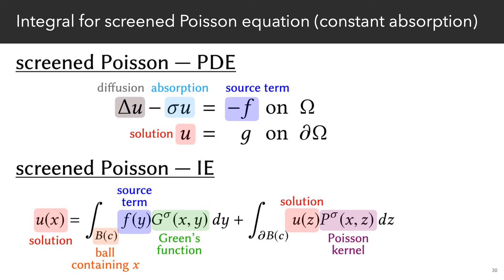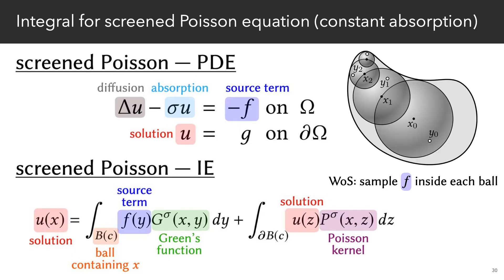As with PDEs, we can keep adding terms to integral equations to capture additional behavior. So for instance, there's a nice integral representation for the screen Poisson equation, as long as the absorption coefficient sigma is constant. From an algorithmic perspective, walk-on spheres now also picks a random point inside each ball in the walk to sample the source term.